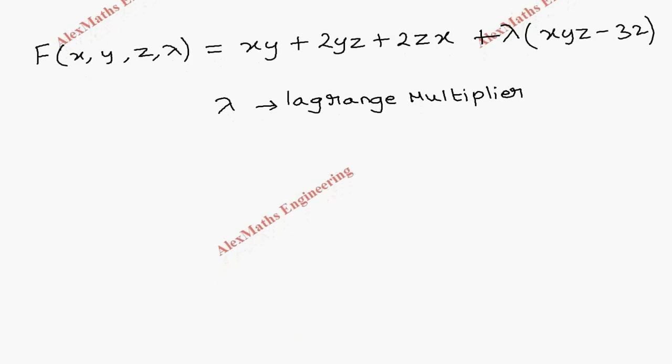Now as the first part, we have to find partial differentiation with respect to x. So Fx will be: xy differentiation the constant is y, then second term both are constants so 0, in third term 2z is constant, then plus lambda. When we differentiate this with respect to x, yz is constant.